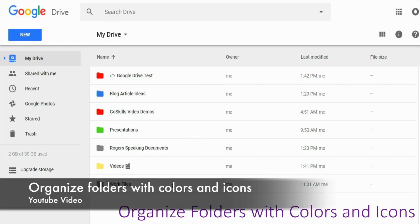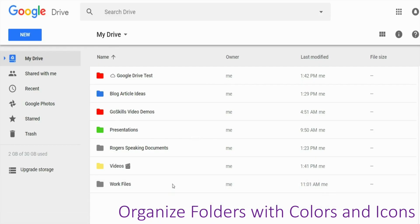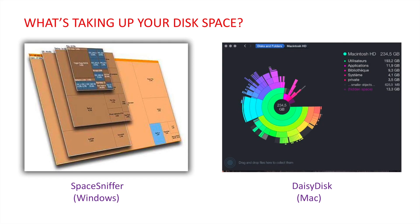The second method is organizing folders with colors and icons — using different colors and icons to differentiate different files. There are also two software tools for managing your disk memory space; sometimes you'll surprisingly find files and folders you had already forgotten using this memory management approach.